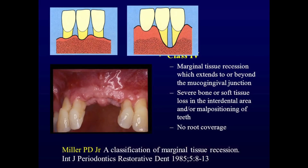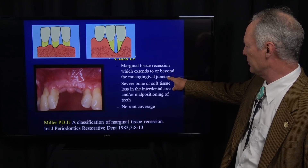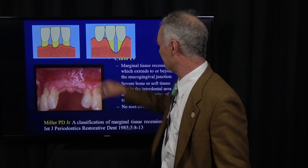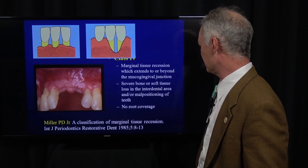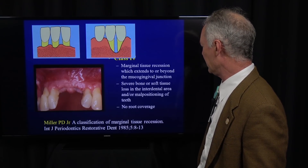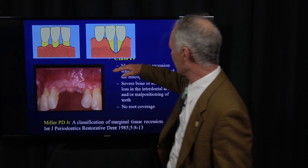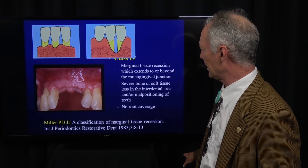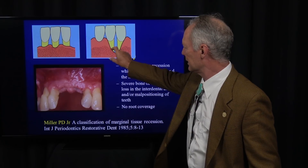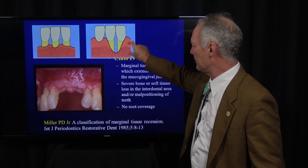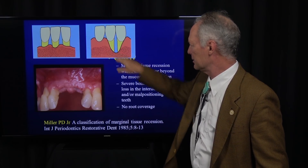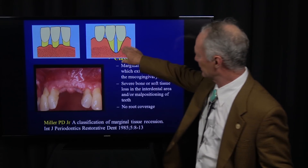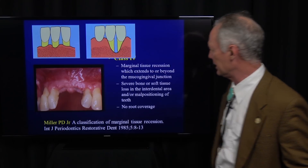Class 4: marginal tissue recession which extends to or beyond the mucogingival junction. Here's the mucogingival junction. Severe bone loss or soft tissue loss in the interdental area and/or malpositioning of the teeth — we've lost a lot of bone, so you expect no root coverage in this case. All you're trying to achieve is keratinized tissue — just keratinized attached gingiva at the apical part of the defect.